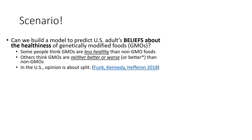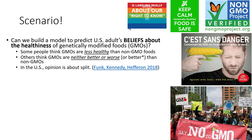Let's introduce the scenario that's going to motivate all of our examples. Our goal is to see if we can build a prediction model that predicts US adults' beliefs about the healthiness of genetically modified foods, or GMOs. Specifically, we're going to try to distinguish between two types of people: those who think genetically modified foods are less healthy than non-GMO foods, and those who think GMO foods are neither better nor worse. Research has shown that in the United States, opinion on this matter is approximately split.